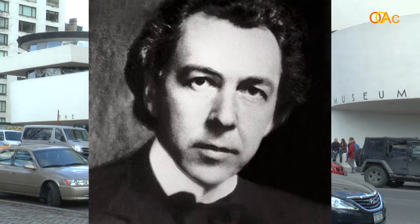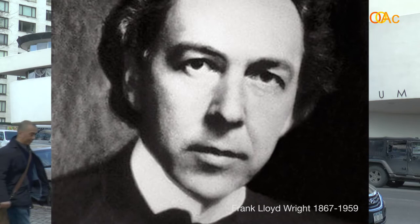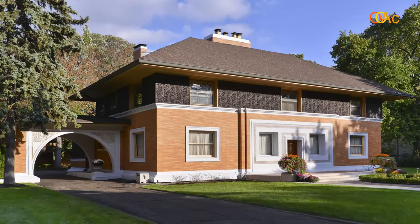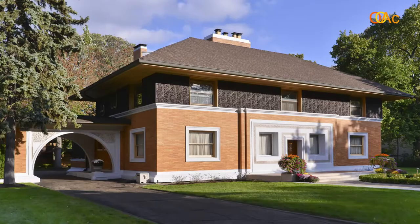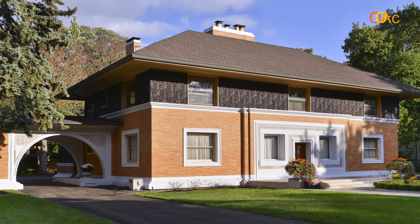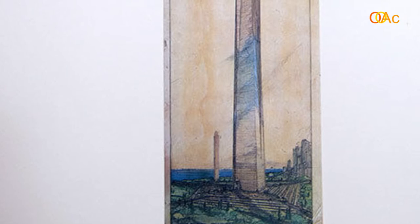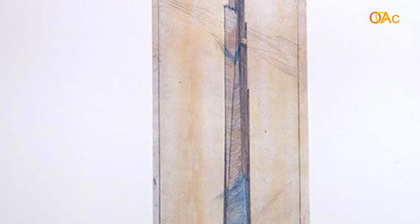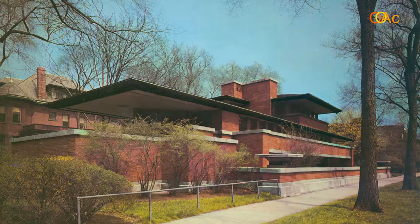Wright was born in 1867 and died in 1959, so he lived through the latter part of the 19th century and the entire first half of the 20th century. In his first house on his own, the Winslow House, there are stables in the back. And then in 1956 he did a project for a mile-high building to be powered by atomic energy. So we see this huge technological span that Wright lived through.